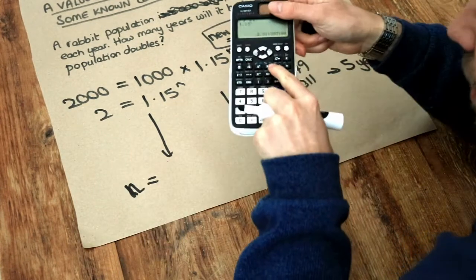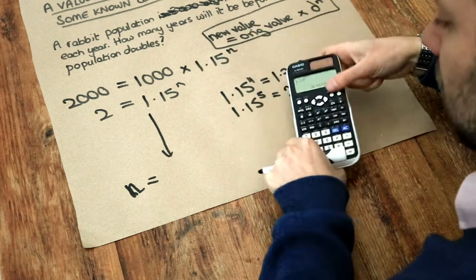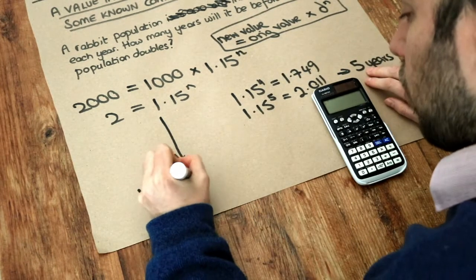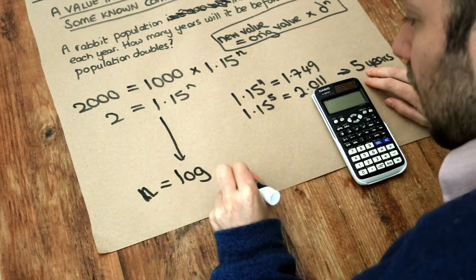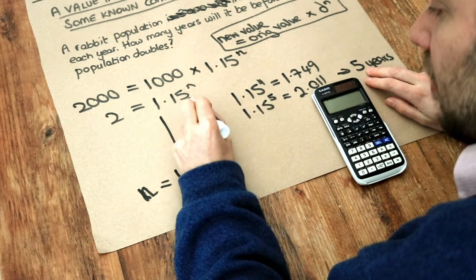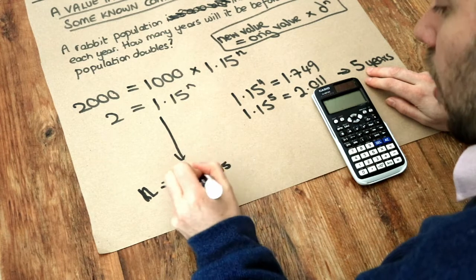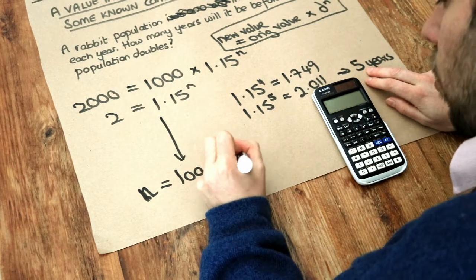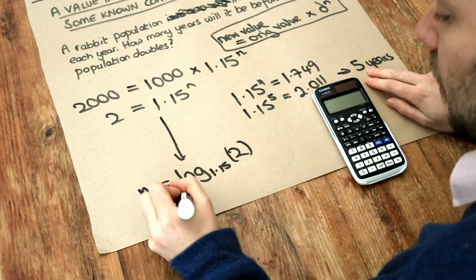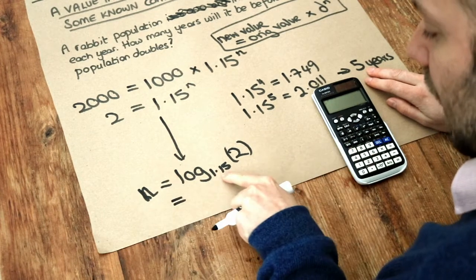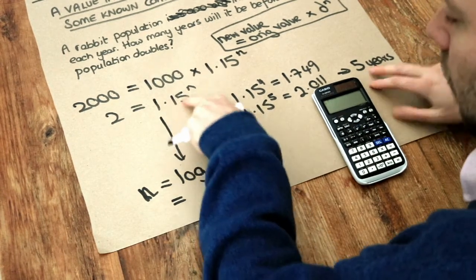Now the log button is this button here, it's got 2 squares next to it. And what I want to do is log base, and we have a little number here, whatever this base is here of the exponential 1.15 we're going to put here. And then we're going to do log base 1.15 of 2. Now don't worry about too much what this means, but basically that little number should be the base of your exponential.